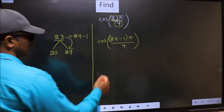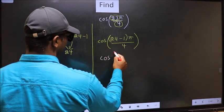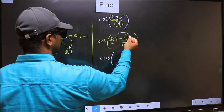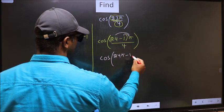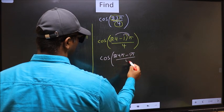Next, cos. Now you should open up the brackets. You get 24π minus 1π, all divided by 4.